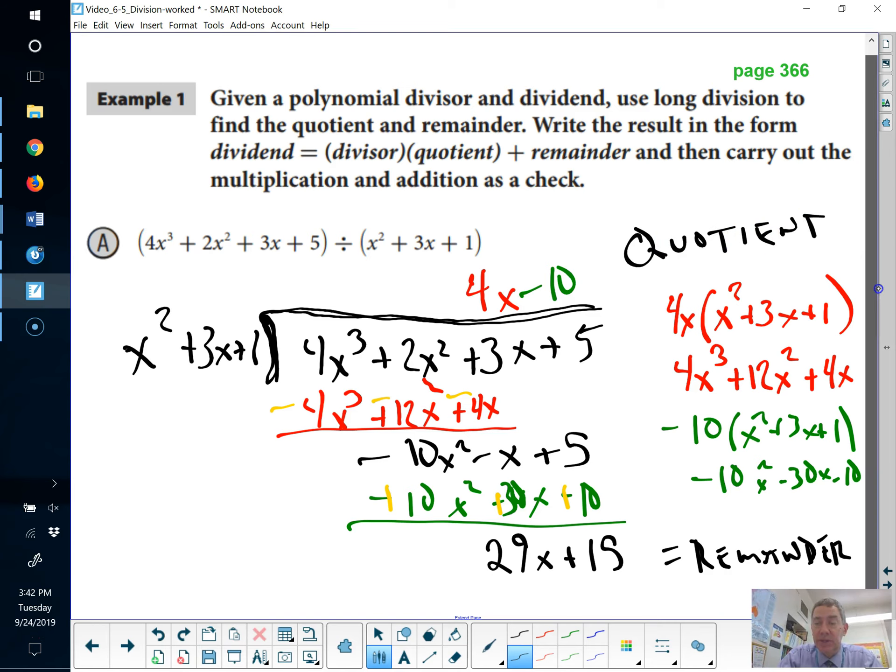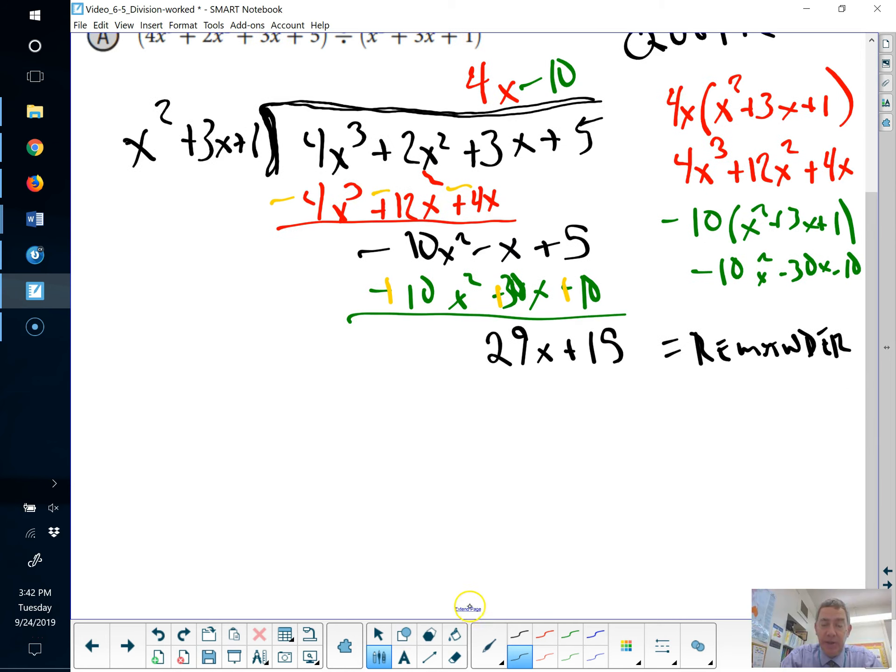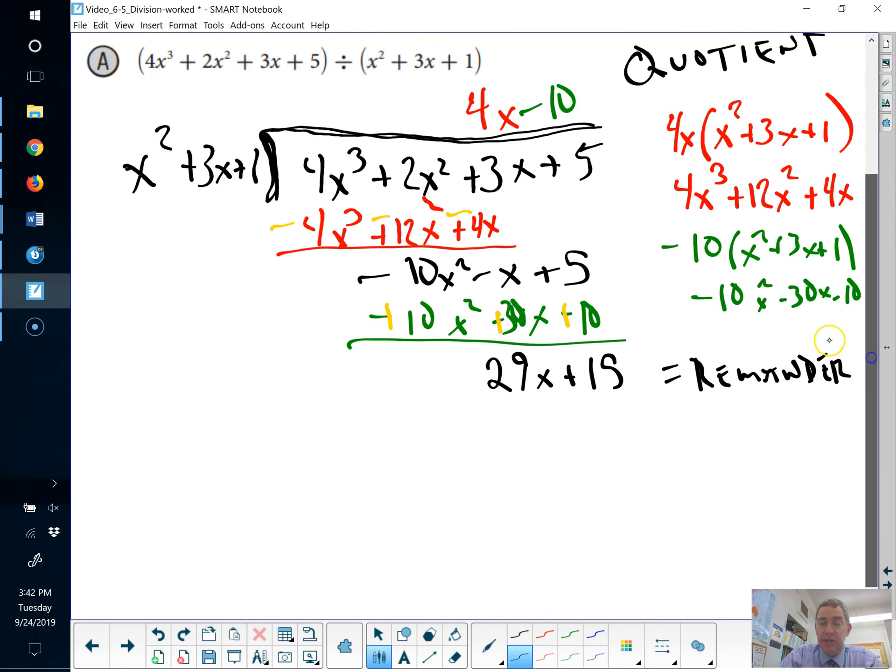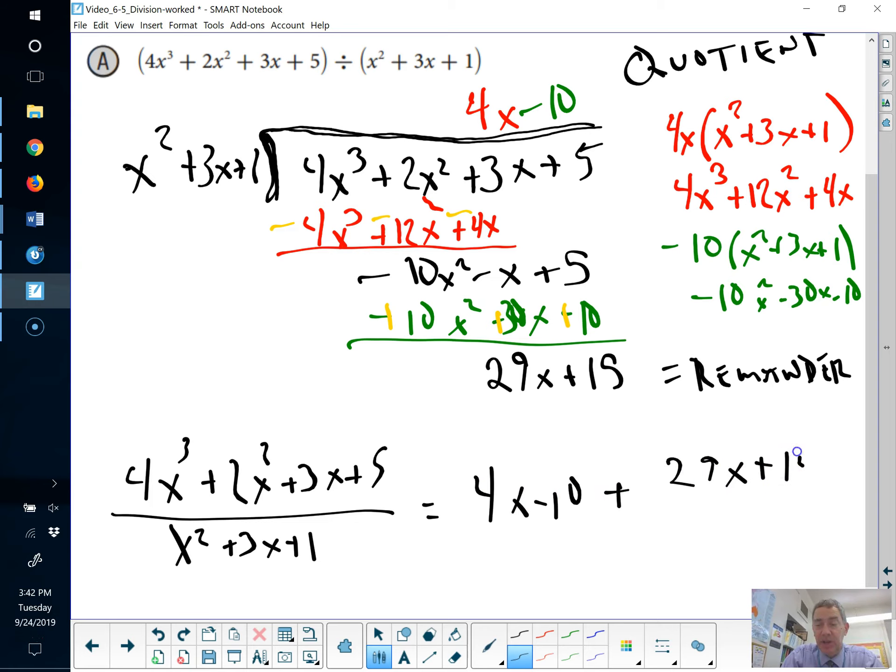So, what this means, big picture, is that 4x cubed plus 2x squared plus 3x plus 5 divided by x squared plus 3x plus 1 is equal to 4x minus 10 plus my remainder, 29x plus 15 divided by your x squared plus 3x plus 10. That's what part of it it is. One last tool.